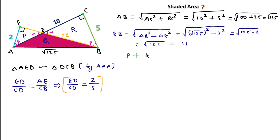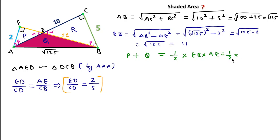P plus Q area equals the area of triangle AEB, which is a right angle triangle. So we write (1/2) × base × height = (1/2) × EB × AE = (1/2) × 11 × 2 = 11. So P + Q = 11 square units.